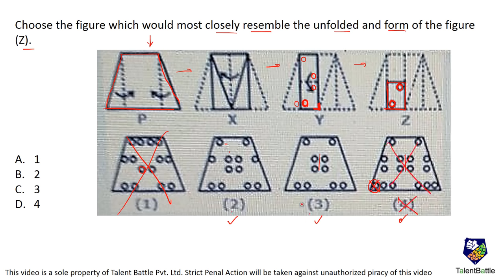Now we have to decide between option 2 and option 3. The paper has been folded along a line, and at the center there is a cut here and a cut here. In the part I am drawing - this quadrilateral - there is actually no cut. So there is not going to be any cut affecting this part, meaning there should be no cut there. So that option gets eliminated and the answer is option 3, which is option C.